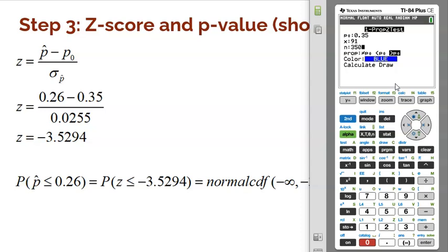Now, keep in mind, in this particular problem, they told us 91 out of 350, which we knew was that 26 percent. But if they just told you 26 percent, you would have to go ahead and take 26 percent, multiply it by 350 to get X—how many successes there were in the sample. If you ever get a decimal, just round to the nearest whole number.